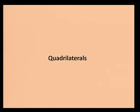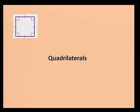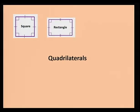First, this is called a square. A square has four equal sides and four angles of 90 degrees. This is called a rectangle. A rectangle consists of two pairs of equal sides and four angles of 90 degrees.